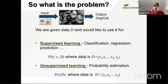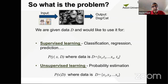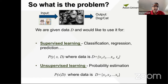In supervised learning with a probabilistic description, we want to understand the probability of an output Y given input X, having seen data D. The data D is a collection of examples with inputs and outputs x1,t1 through xN,tN. In unsupervised learning, we want to write the probability of X having seen the data, where the data is just a collection of observations.